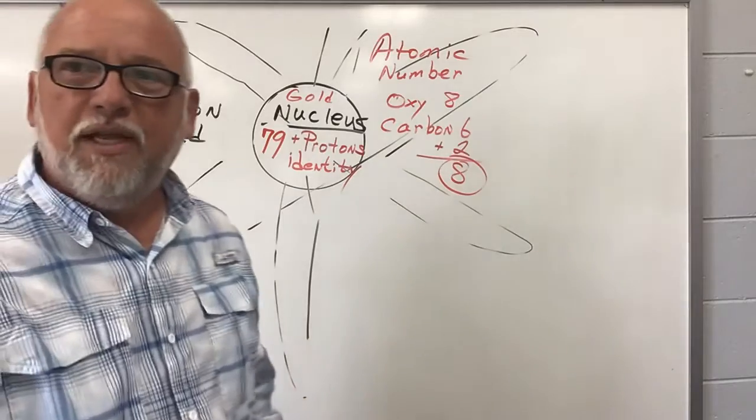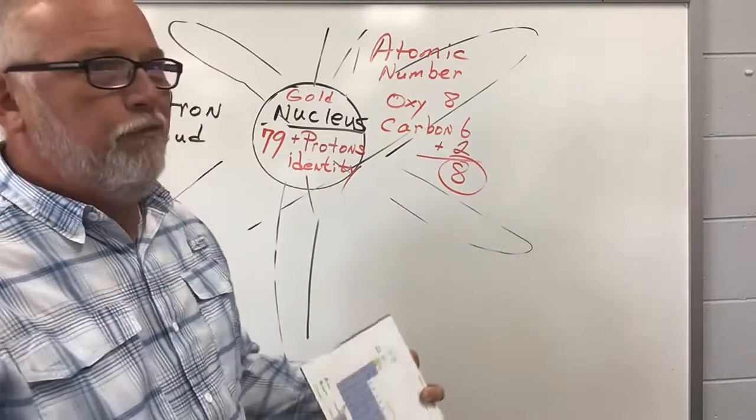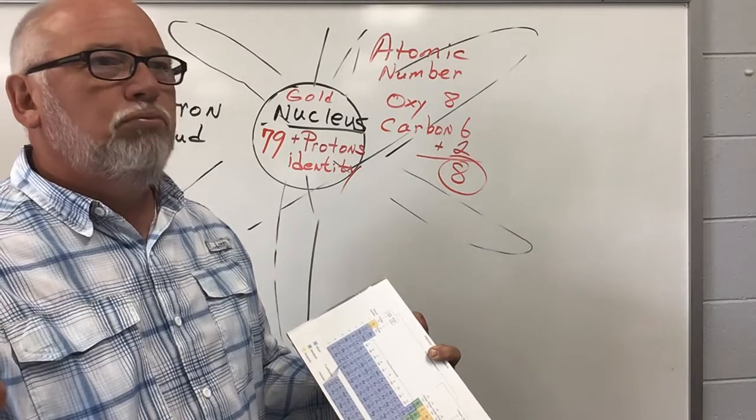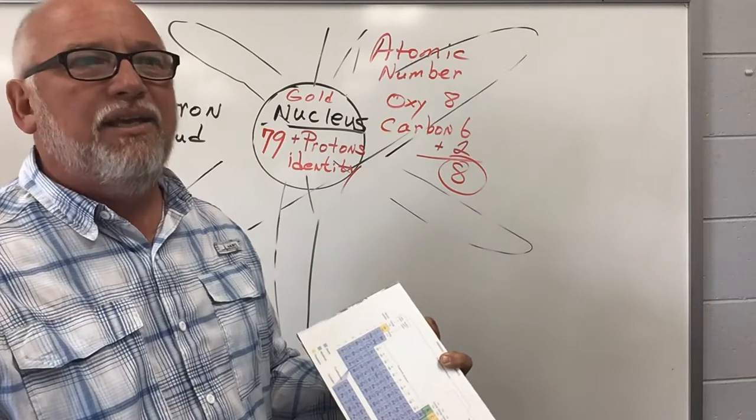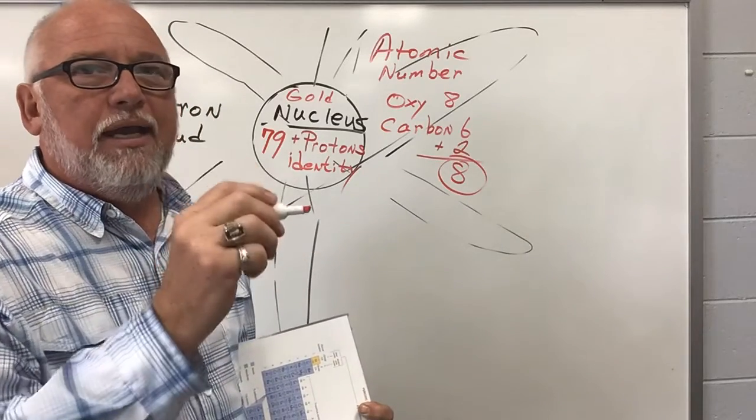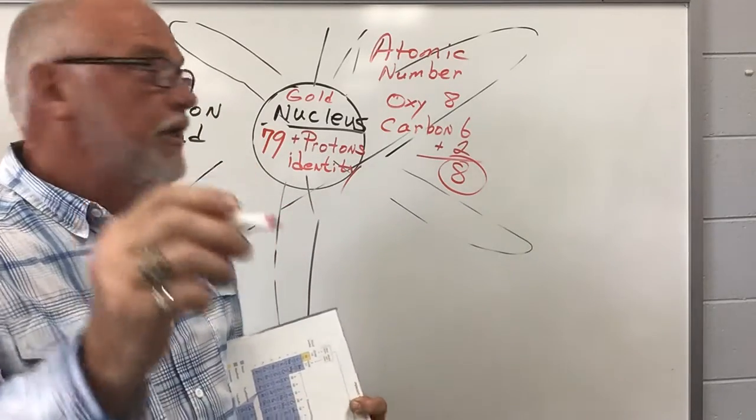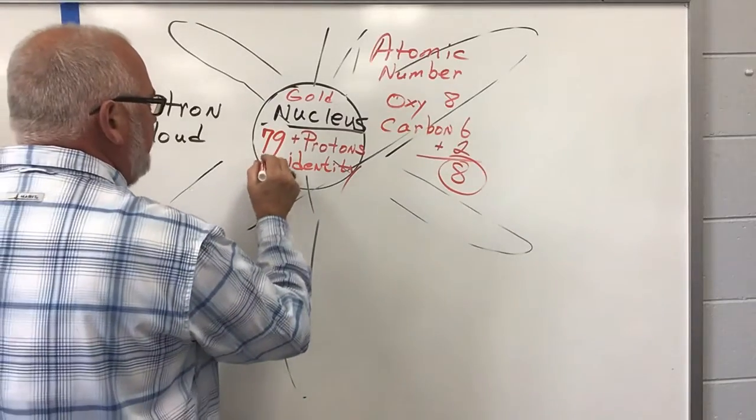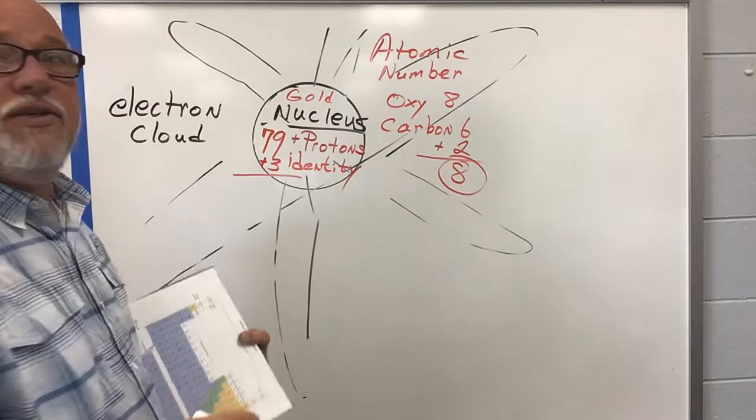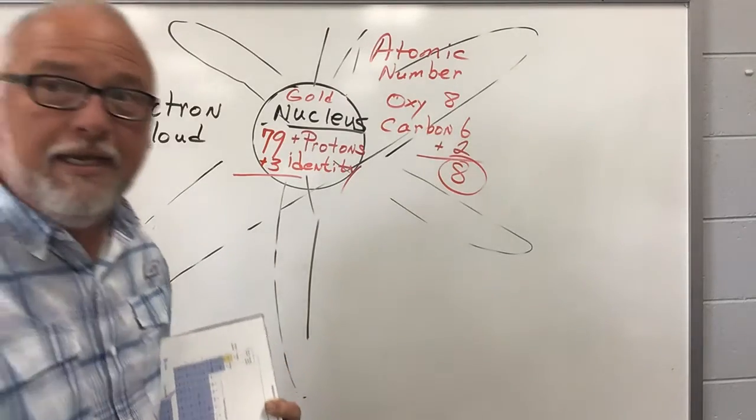It is gold because it has 79 protons. What if we added three? Let's add three to 79, 80, 81, 82. Let's add three protons. It now has an atomic number of 82.